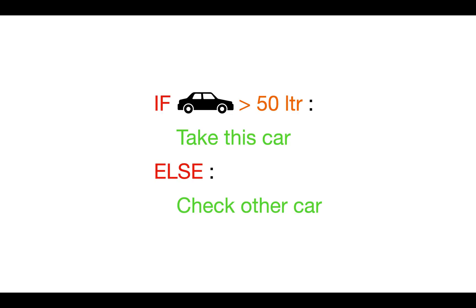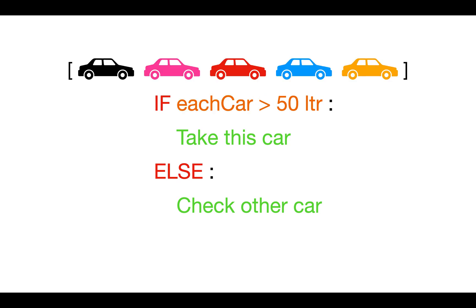To decide which car to take, you go to the first car — say a black car — and check if the fuel is greater than 50 litres. If yes, you take that car; otherwise you move to another car. So you go to the pink car, check for fuel, then the red car, blue car, and finally the yellow car.